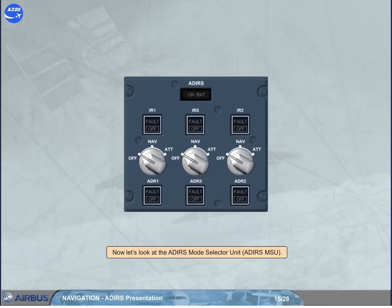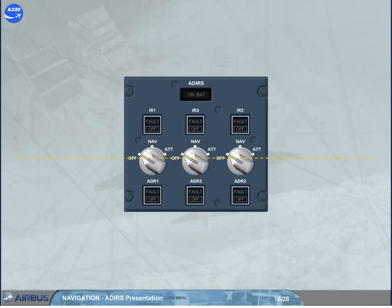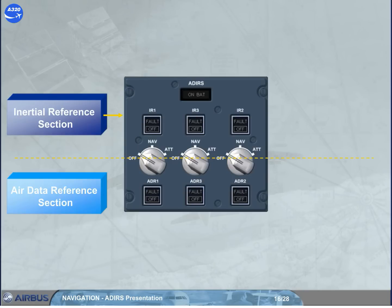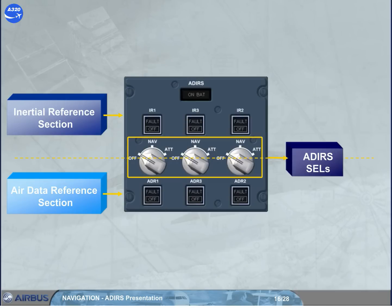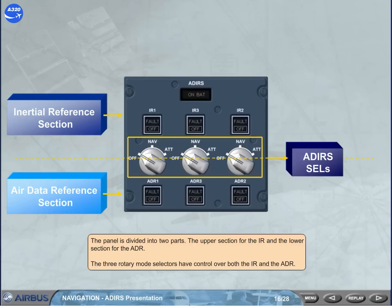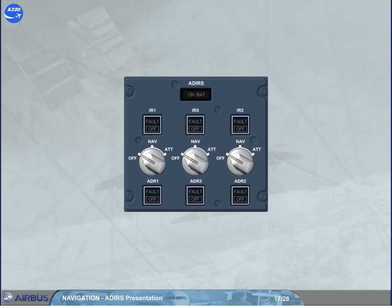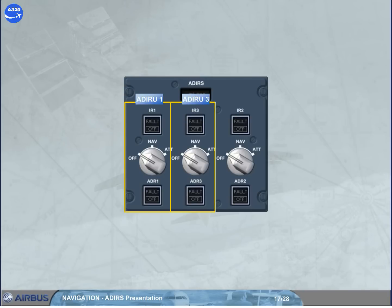Now let's look at the ADRs mode selector unit, ADRs MSU. The panel is divided into two parts: the upper section for the IR, and the lower section for the ADR. The three rotary mode selectors have control over both the IR and the ADR. The controls and indicators for the individual ADRUs are grouped and arranged in the order 1, 3, and 2.